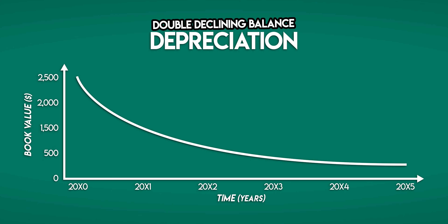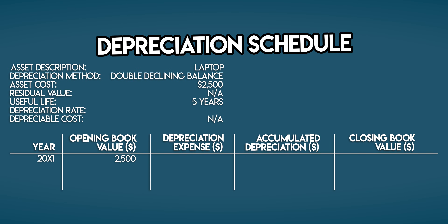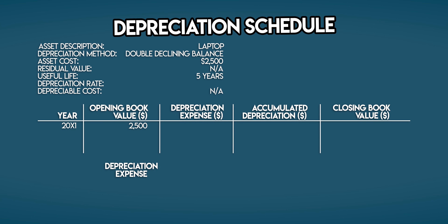This graph looks quite different to the straight line depreciation one, but the two are linked. Because in the double declining balance method, your depreciation expense is equal to 2, multiplied by your straight line depreciation rate, multiplied by your opening book value.